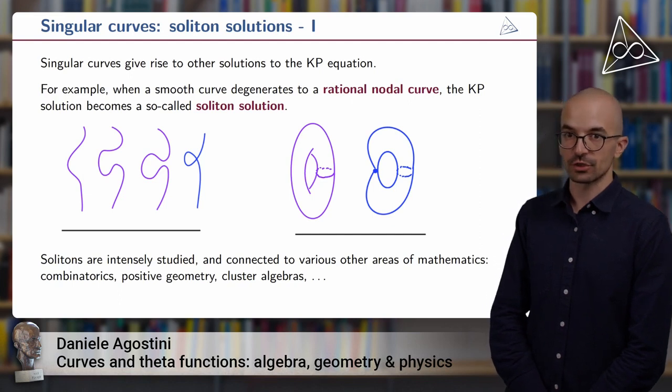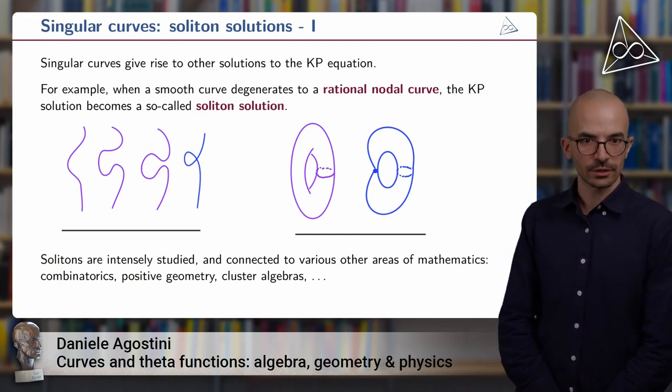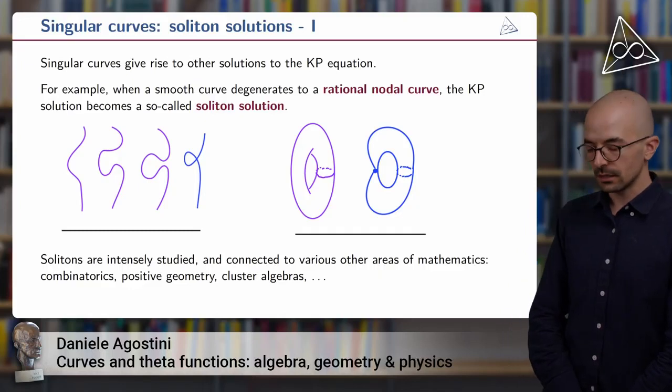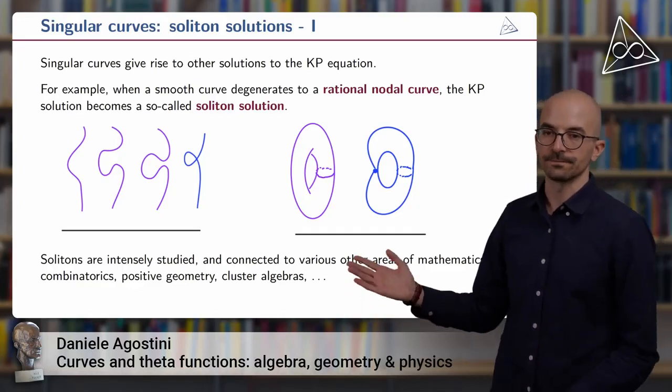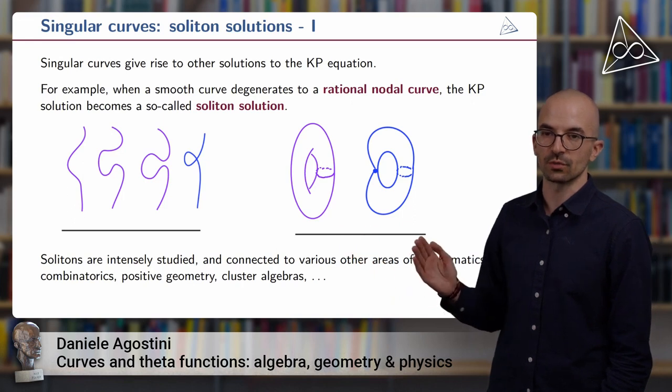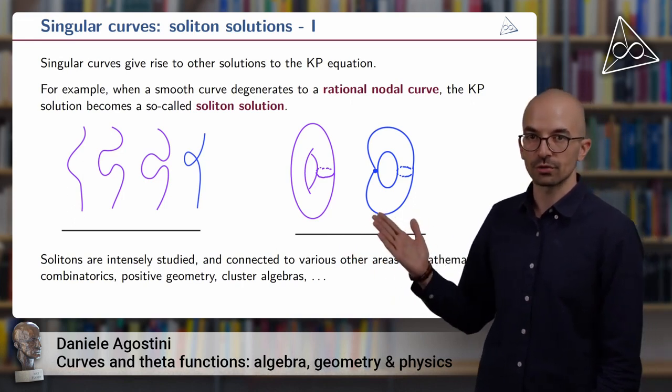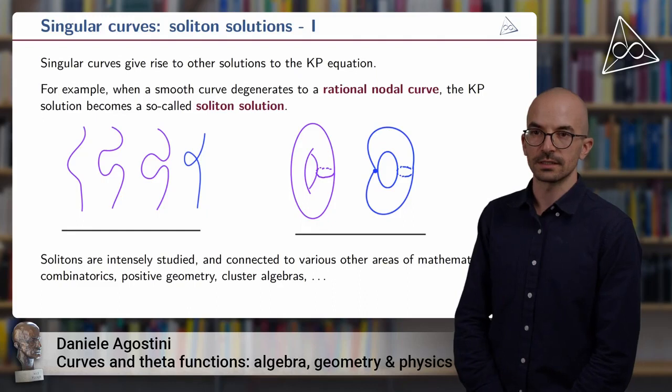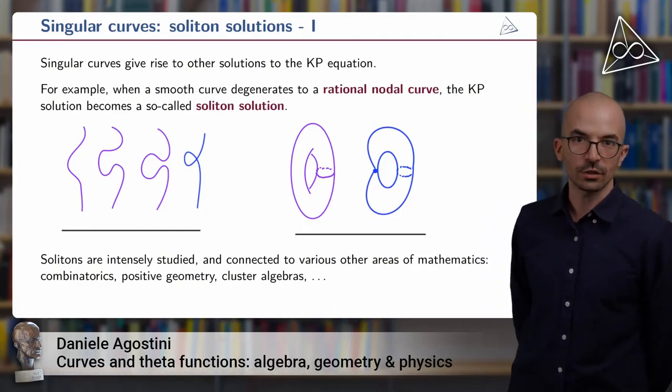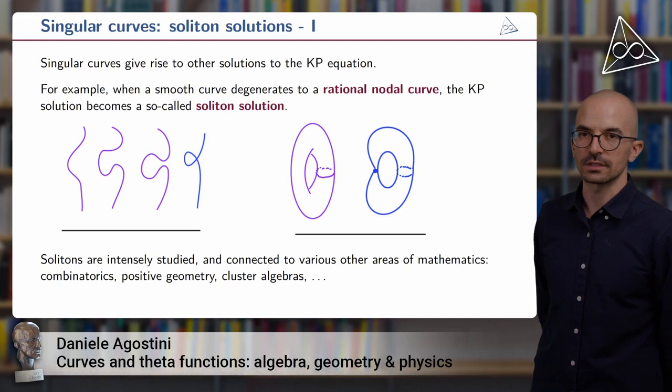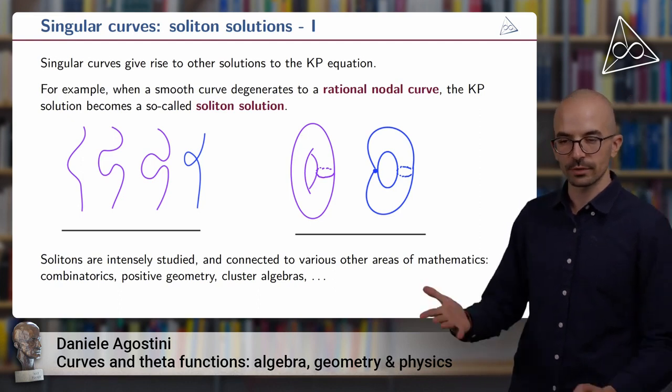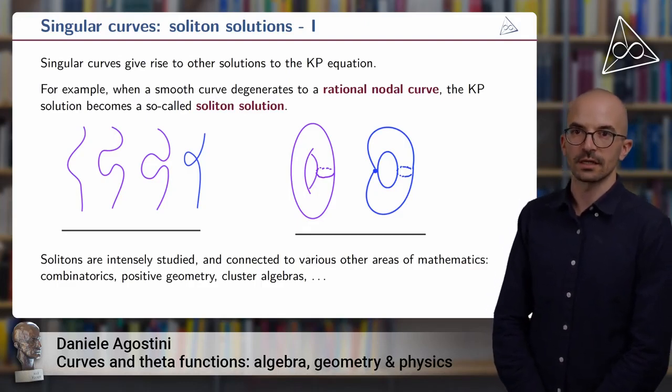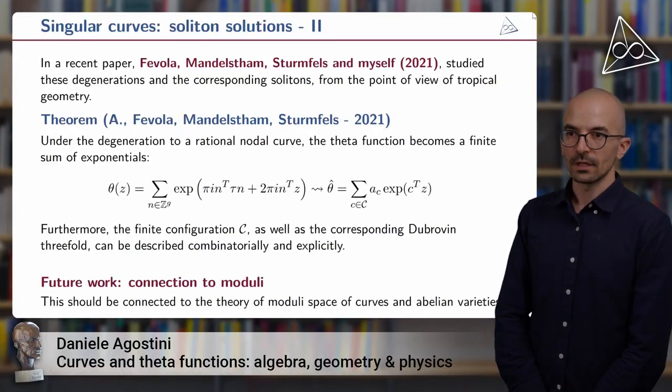So we have such a degeneration process, which is very common in algebraic geometry. But this also has a parallel in the physics world. Indeed, one can see that when the smooth curve degenerates to the rational nodal one, then the KP solution from the smooth curve degenerates to a so-called soliton solution corresponding to the singular curve. Solitons are a very intensely studied topic in mathematics, and they are connected to geometry, physics, but also other areas such as combinatorics, positive geometry, cluster algebras, and so on.